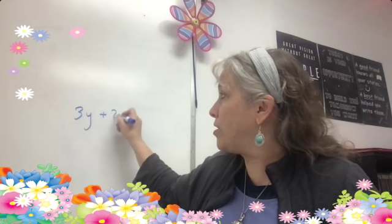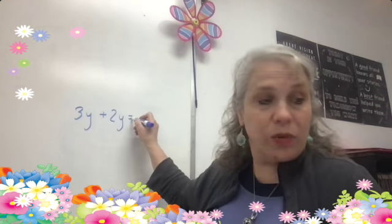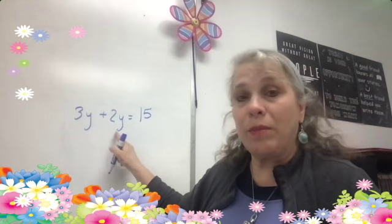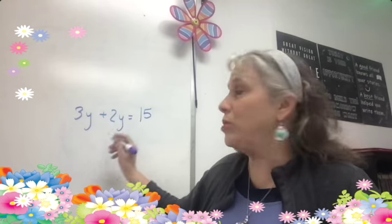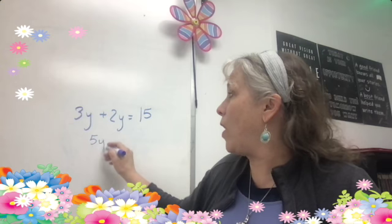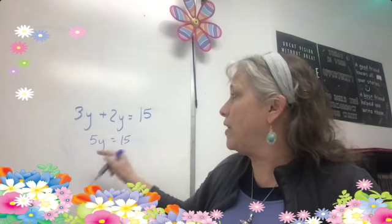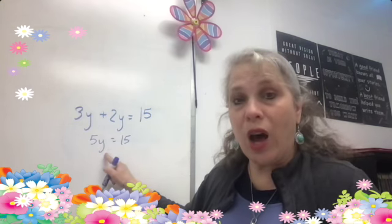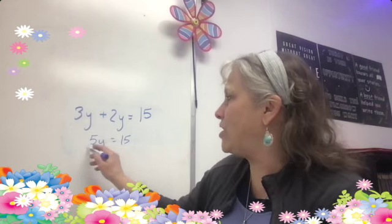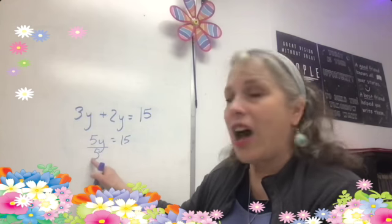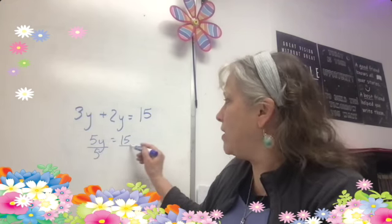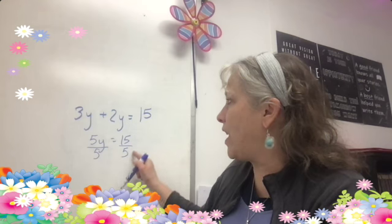What if I had something like 3y plus 2y is equal to 15? These can be combined: 3 plus 2 is 5y equals 15. This means 5 times y. What can I multiply by 5 to get it to disappear? Well, not really disappear, but it changes to 1 if I divide this side by 5 and I get 1.